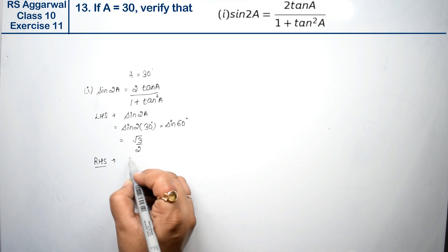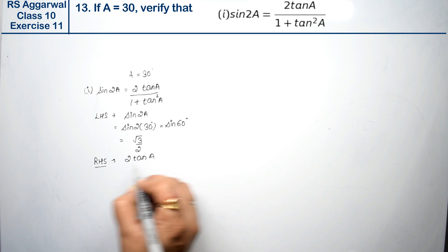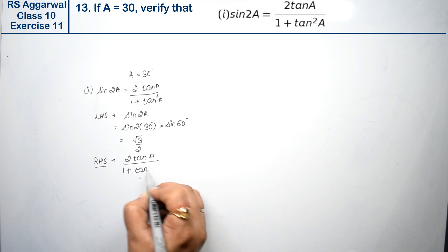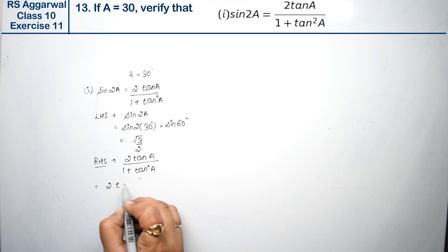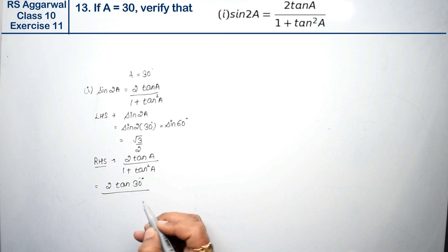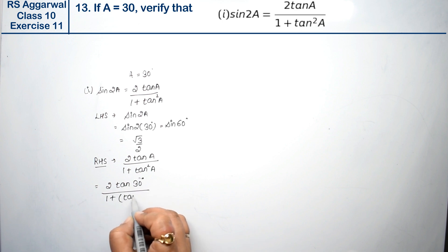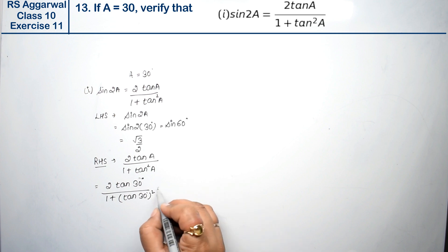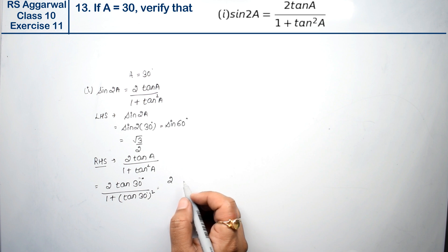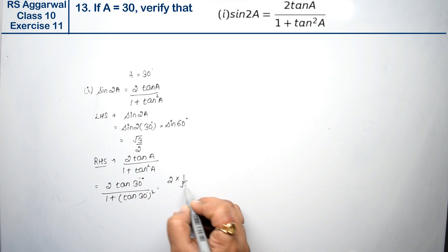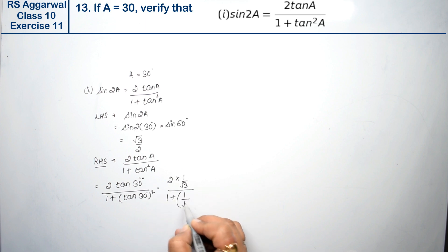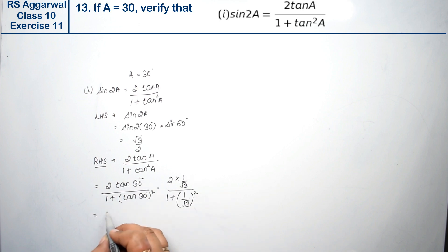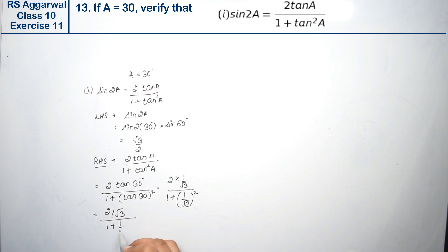Now for the right hand side: 2 tanA upon 1 plus tan²A. So 2 tan 30° upon 1 plus tan²30°. Now tan 30° equals 1/√3, so the numerator becomes 2 × (1/√3) = 2/√3. The denominator is 1 plus (1/√3)² = 1 plus 1/3.